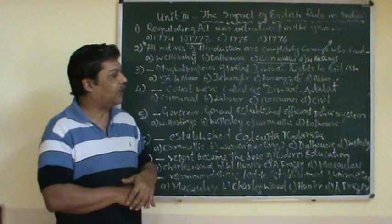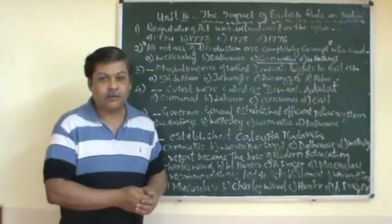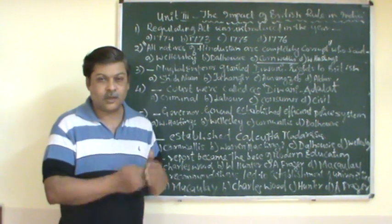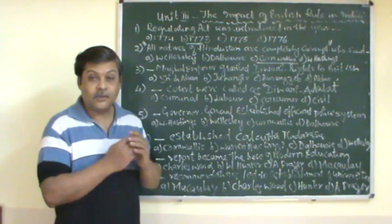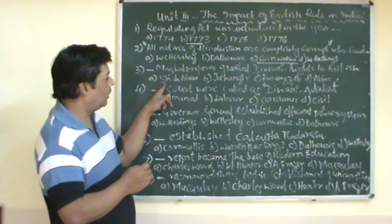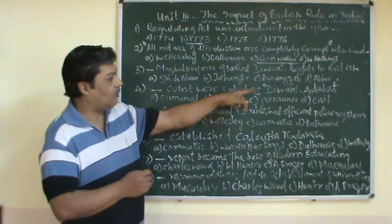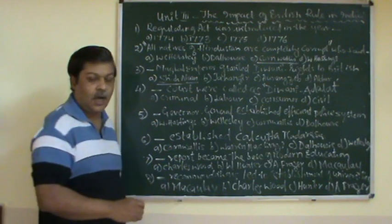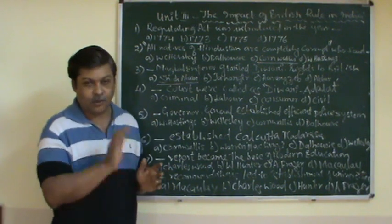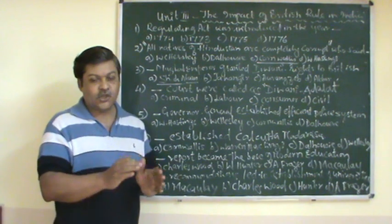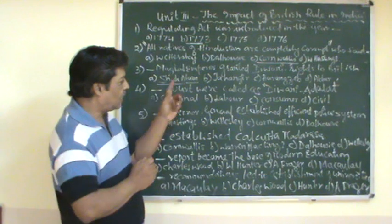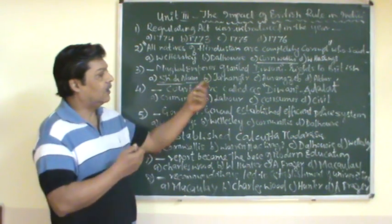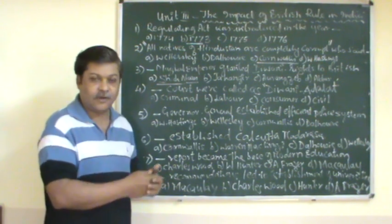Which Mughal Emperor granted Diwani Rights to the British? Diwani Rights is the right of collection of revenue. The choices given are Shah Alam, Jahangir, Aurangzeb, and Akbar. The answer is Shah Alam — specifically Shah Alam the Second — who was the Mughal Emperor that granted the Diwani Rights to the British.